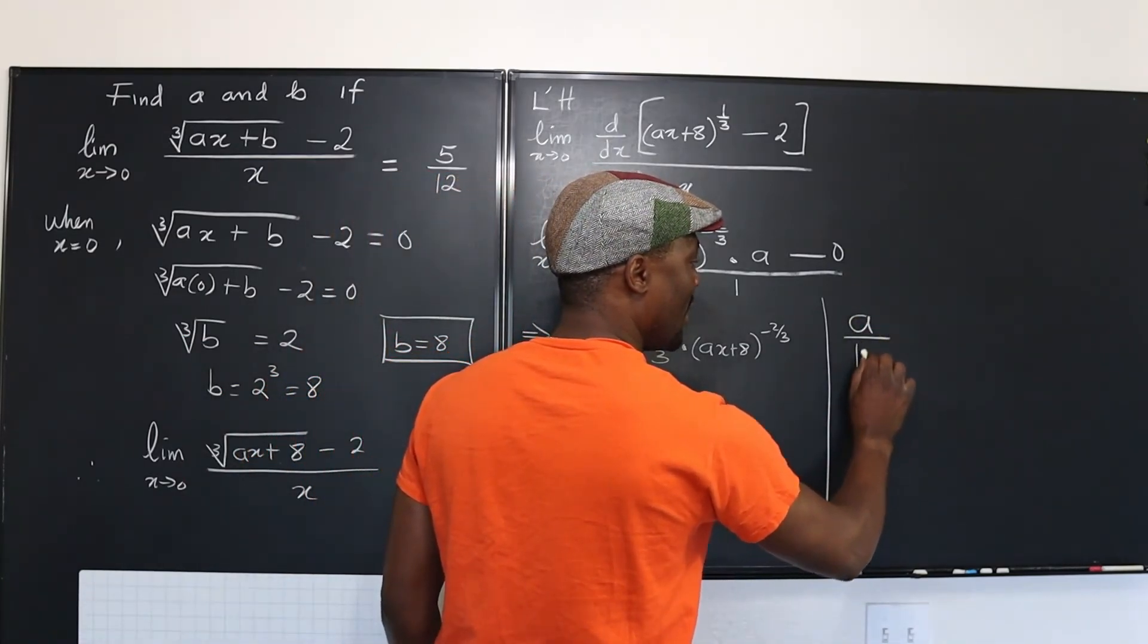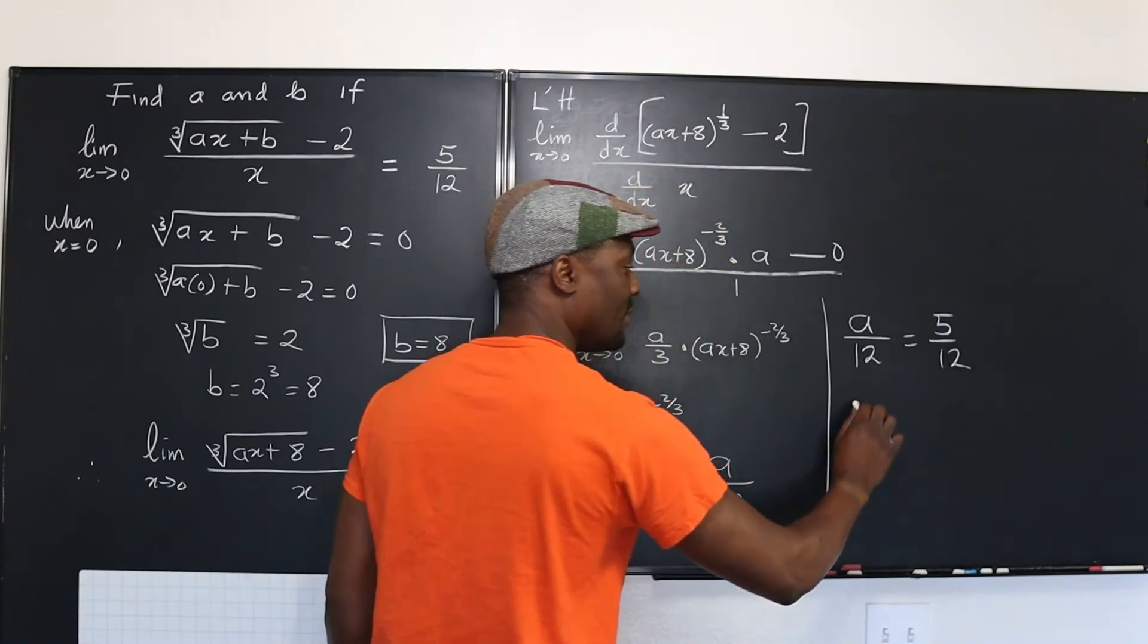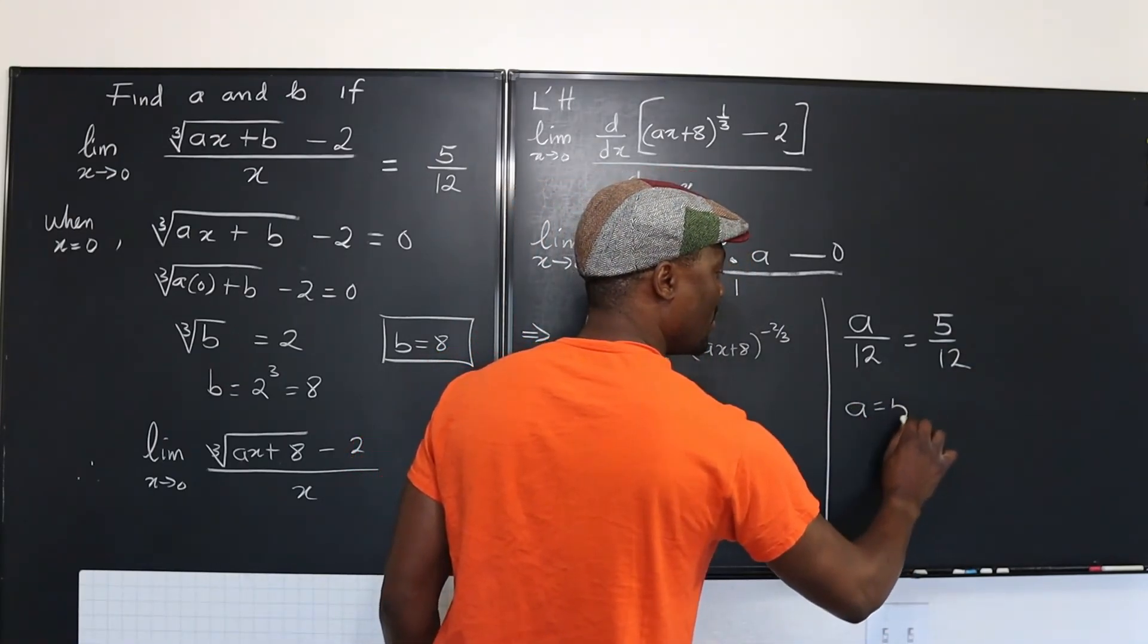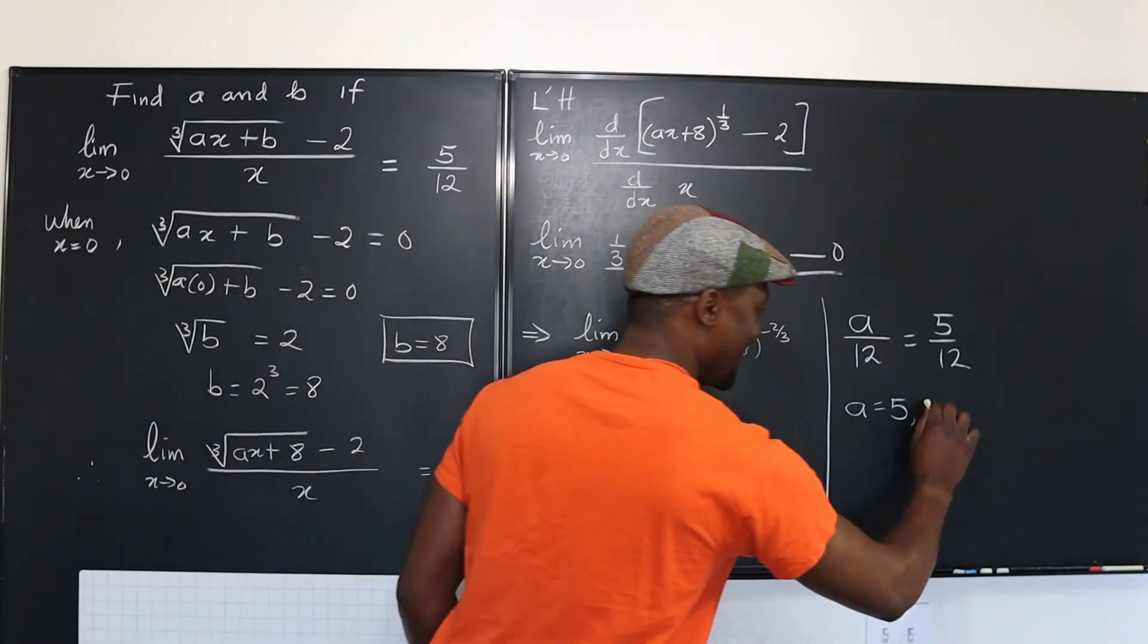So A over 12 equals five over 12. Clearly, A equals five. And what did we say B was? B equals eight.